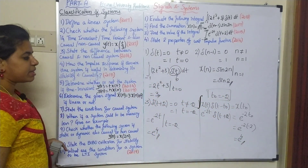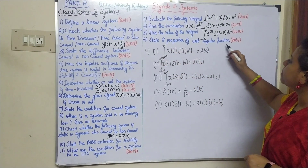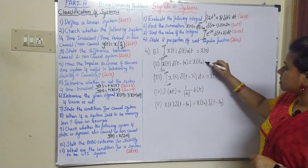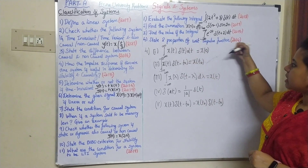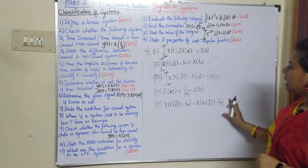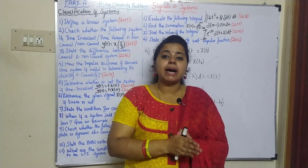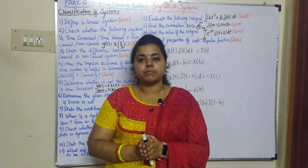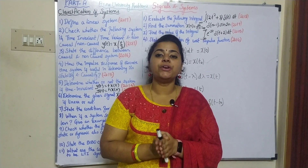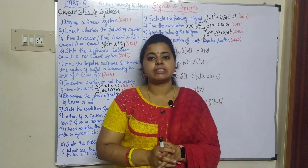You can follow this method for solving impulse function problems. The last question asks you to state two properties of the unit impulse function - use the sifting property as we applied in the questions above. Study all the part A university questions thoroughly. Thanks for watching this video. If you like this video, subscribe to my channel, click the like button, and share it with your friends.